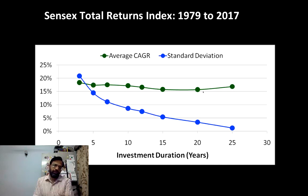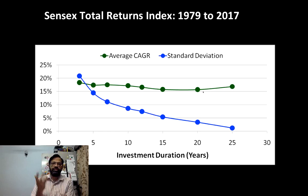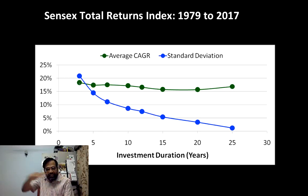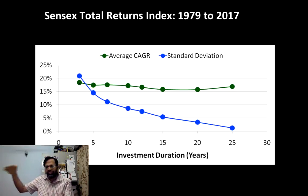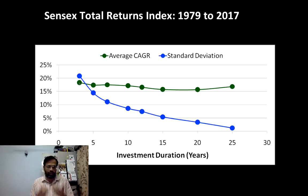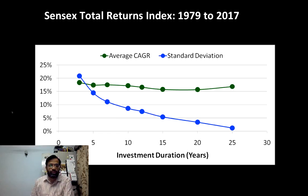Now look at the green line alone. If somebody asks me what is the average return if I invest in Sensex for the next 10, 15, or 20 years — look at the average. Whether it is a three-year period or a twenty-five-year period, the average is practically the same; it's pretty much a flat line. The deviation in the average is very, very small. So does that mean whether I invest for three years or twenty-five years I can expect the same return? That's obviously wrong. What is missing is the standard deviation — the volatility.